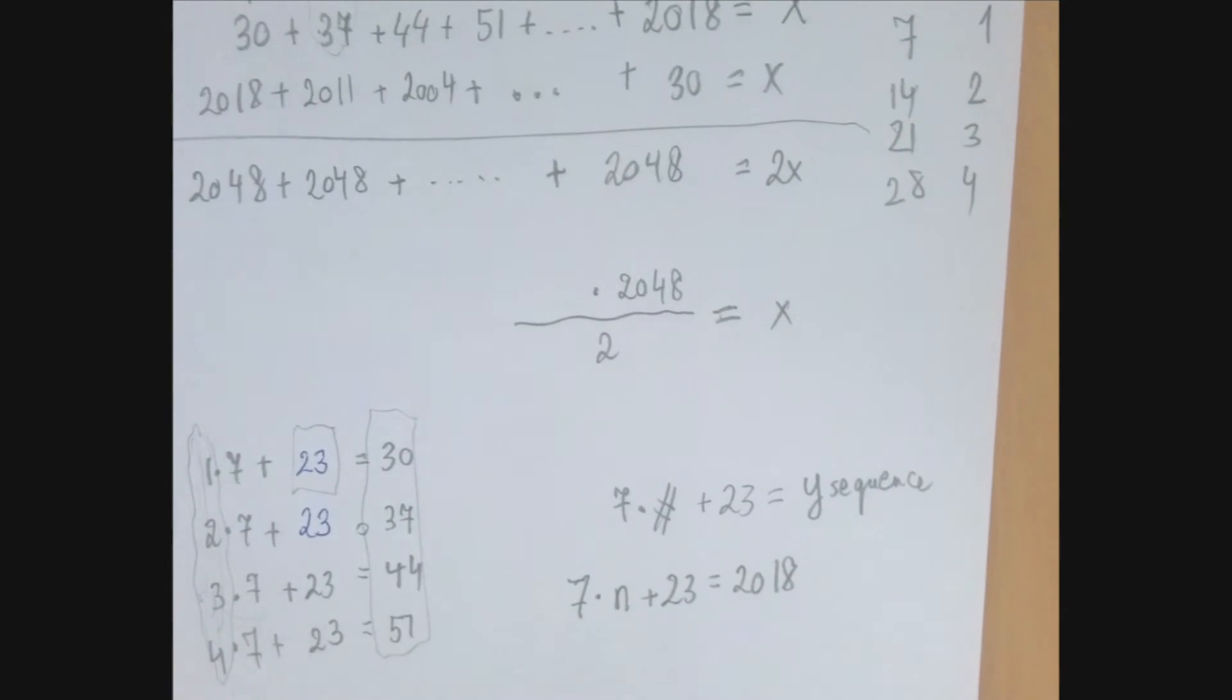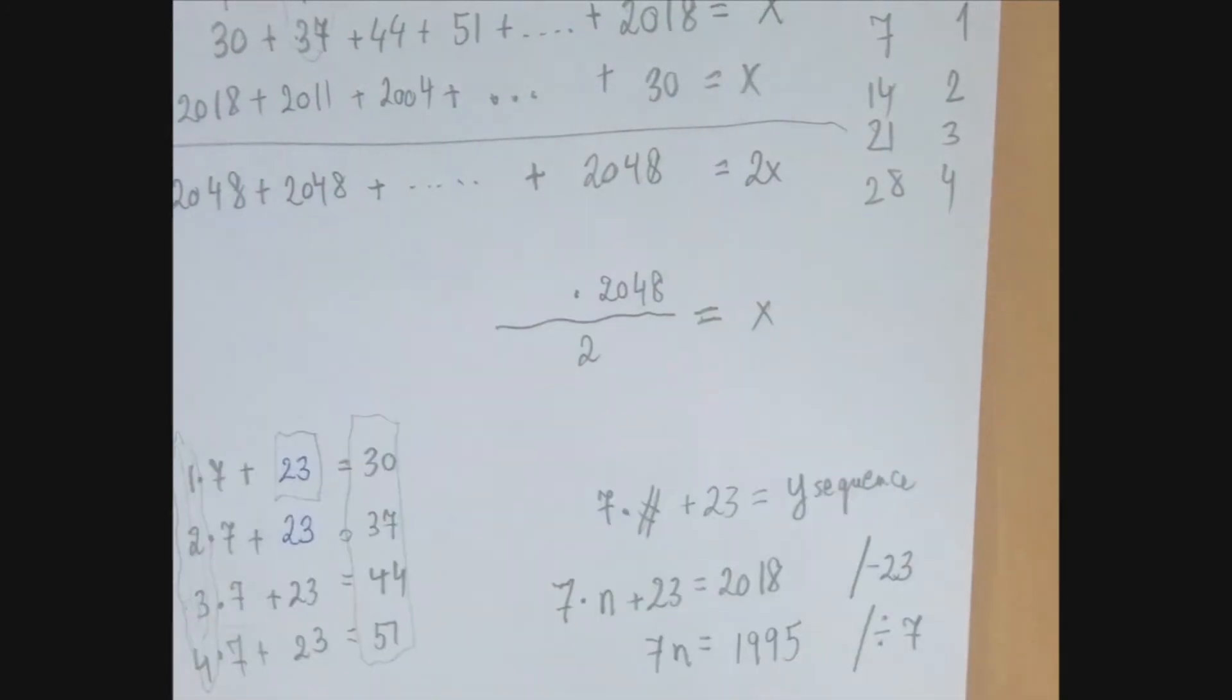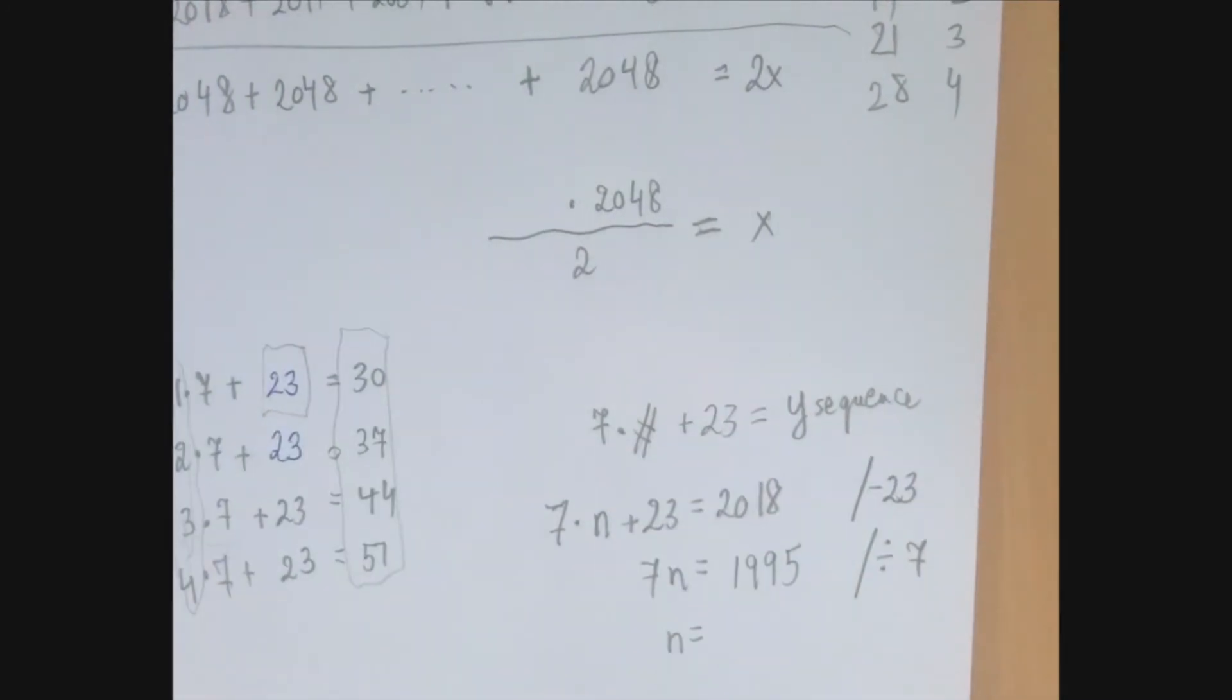Well, this is a two-step equation for n, right? What happens to the unknown? Multiply by 7, add 23. So we're going to undo them in the reverse order. We're going to first subtract 23, so we have 1995, and then we divide by 7, so n is 285.